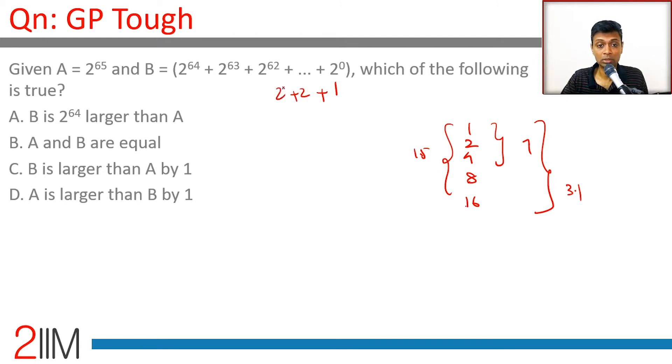So 1 plus 2 plus 2 square all the way to 2 power 64, this is 2 power 65 minus 1. So A is 2 power 65, B is 2 power 65 minus 1.